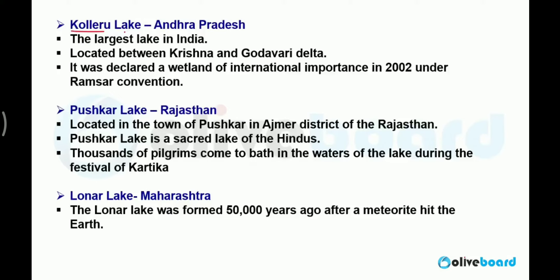Kolleru Lake is situated in Andhra Pradesh. It is the second largest lake in India by area, after Chilka Lake. In some books it may be listed as the largest, but consider it the second largest. It is located between the Krishna and Godavari delta. It was declared a wetland of international importance in the year 2002 under the Ramsar Convention. It is the largest lake of South India.